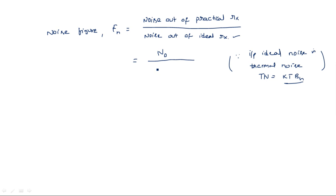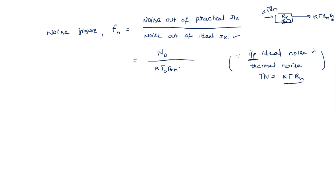We assume the temperature to be T₀ or TN. Now, we are talking about output noise, but thermal noise KT₀BN is present at the input. At the output, after passing through the receiver, the gain G is added. So the output noise of the ideal receiver is KT₀BN multiplied by G. If G is not added, it specifies only the input; with G, the entire factor is at the output.